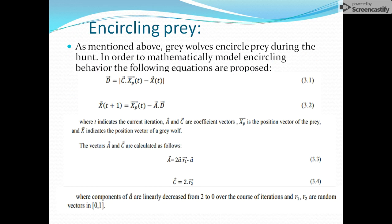Next is encircling the prey, which is one of the most important parts of this algorithm. Encircling means surrounding the prey so that you can harass it and finally attack it. If you encircle the prey properly, attacking or hunting becomes much easier. Similarly in the optimization algorithm, if all search agents properly encircle the goal, there is a better chance to hunt that specific prey.